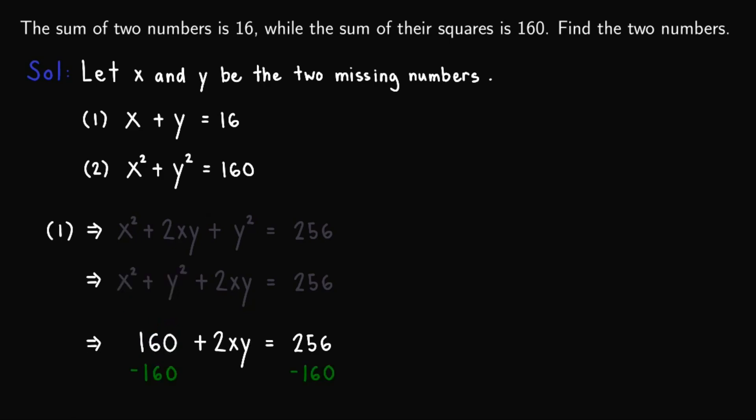Subtracting 160 from both sides, the 160 on the left will cancel out and we'll be left with 2xy equals 96. Dividing both sides by 2, we have xy equals 48.